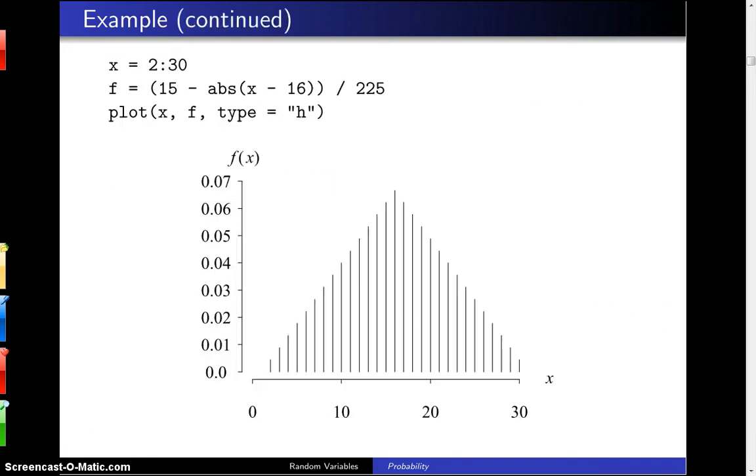Now, if we'd like to take a look at what that probability mass function looks like, here is some R code. x runs from 2 to 30, f is 15 minus the absolute value of x minus 16, divided by 225.